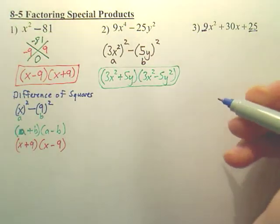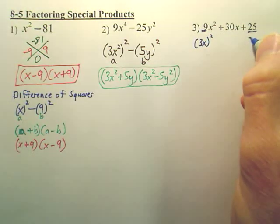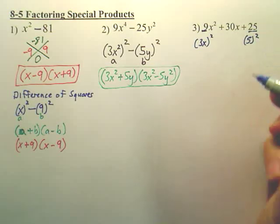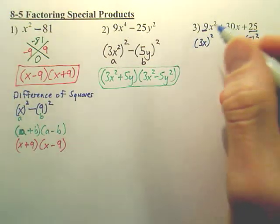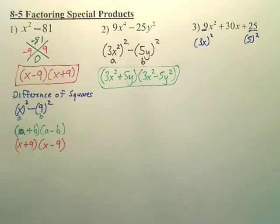This is 3x squared, and this is 5 squared. If you notice, those are both squared, okay? And then what you do is you go, okay, just like here, you call this a, this b.